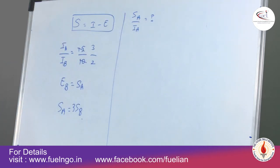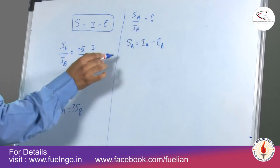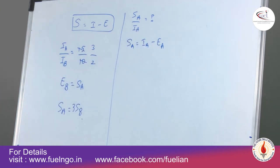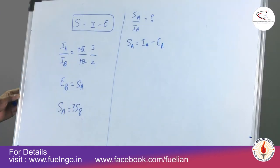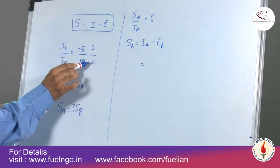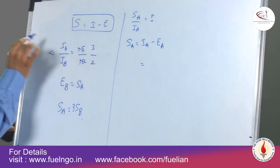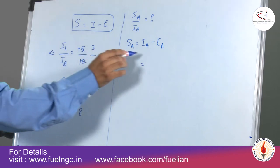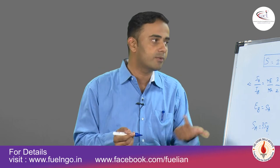What percentage of his income is A going to save? Savings of A equals income of A minus expenditure of A. Savings of A is 3 times that of savings of B. Now, income of A can be substituted as 2 by 3 times income of A equals income of B. All variables can be substituted in terms of B, but because the question asks about the variable in terms of A, we are not in a position to answer this question.